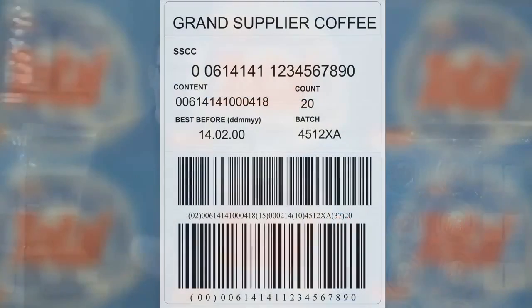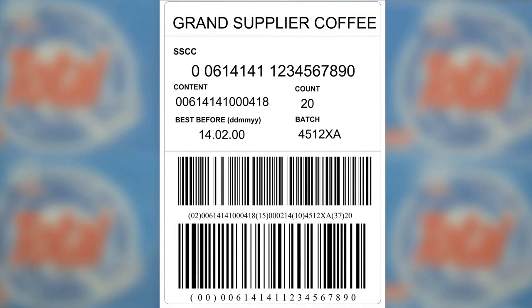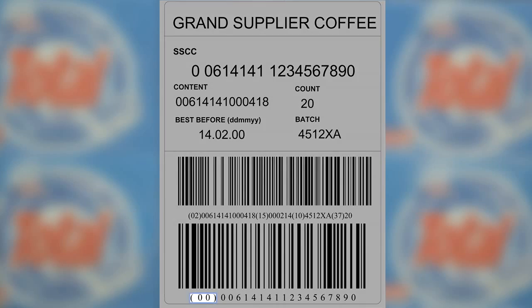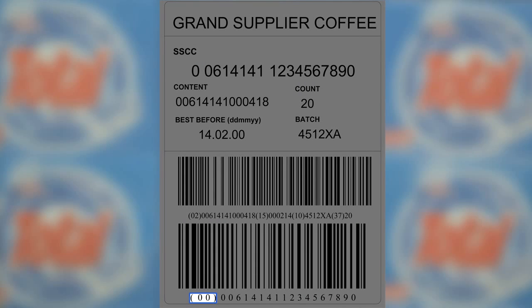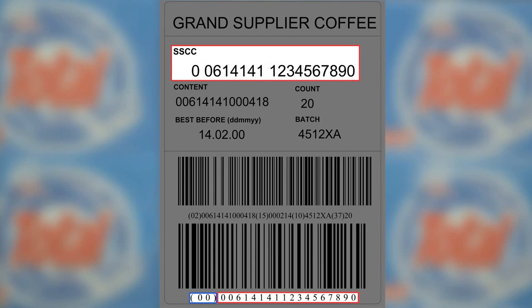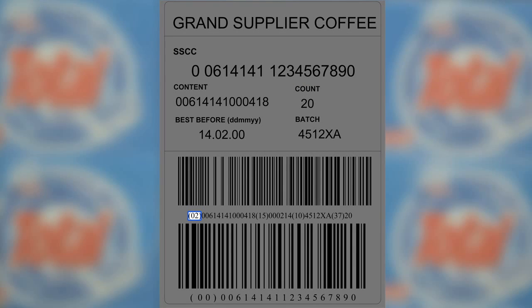Because the GS1-128 barcode symbology has alphanumeric capability, it is ideal to encode data on the GS1 logistic label. The data carried by GS1-128 symbols must be structured using GS1 application identifiers, or AIs, which are shown in brackets. The AI (00) defines that the next 18 digits is the SSCC. The AI (01) defines that the following 14 digits is the Global Trade Item Number, or GTIN, of the trade items contained on the pallet.